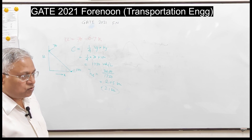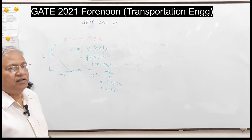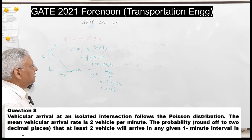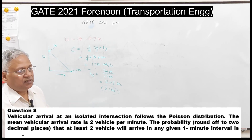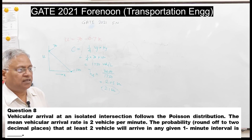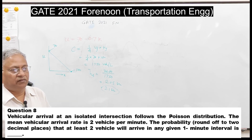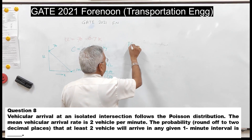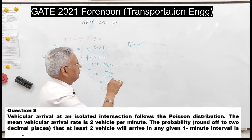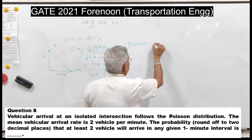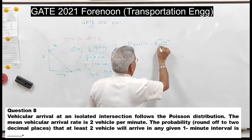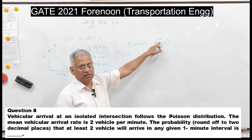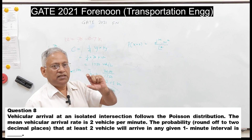The last question: vehicle arrivals at an isolated intersection follow the Poisson distribution with a mean arrival rate of 2 vehicles per minute. We need to find the probability, rounded to two decimal places, that at least two vehicles arrive in a one-minute interval. Poisson distribution: P(X = x) = e^(−m) × m^x / x!, where m = 2.